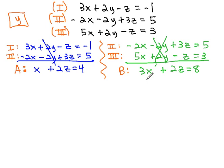Notice, because we've eliminated the y's twice, equations A and B make up two equations with two unknowns.